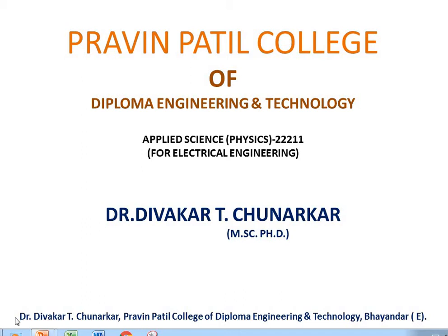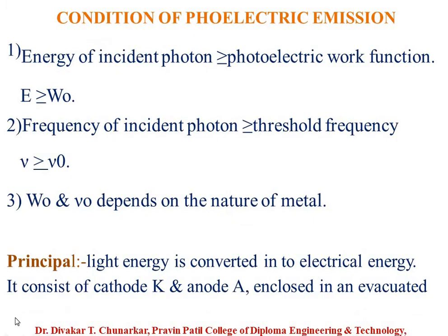Good morning everybody. Last time we explained Einstein's photoelectric effect: half mv squared equals h times (nu minus nu zero). This is the photoelectric equation of Einstein. After that we explained the photoelectric cell and its applications.